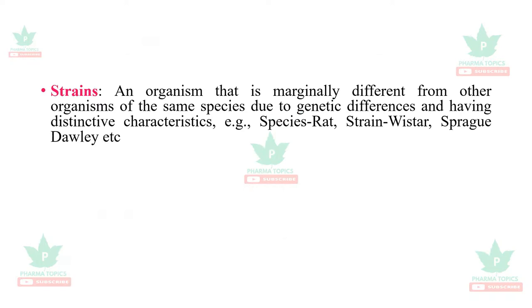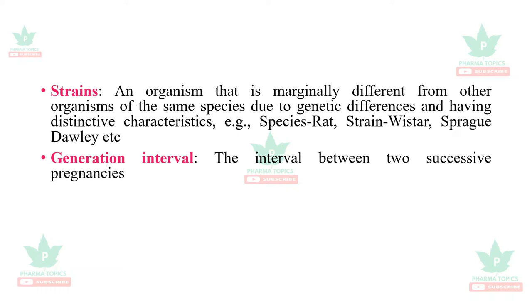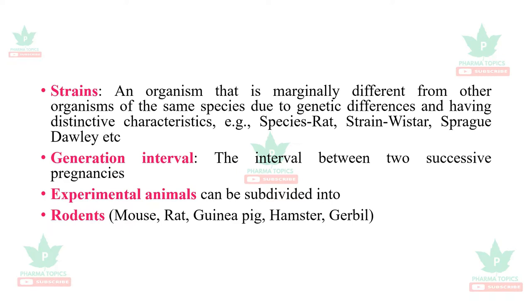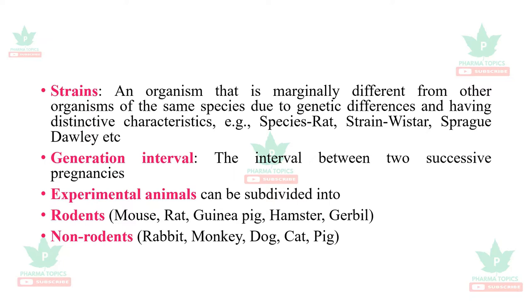A strain is an organism that is marginally different from other organisms of the same species due to specific genetic differences, having distinctive characteristics. For example, the species is rat and the strains are Sprague-Dawley, Wistar, etc. The interval between two successive pregnancies is called a generation interval. Experimental animals can be subdivided into rodents — mouse, rat, guinea pig, hamster, gerbil — and non-rodents — rabbits, monkeys, dogs, cats, and pigs — and others such as frog, pigeon, zebrafish, chicken, and sheep.